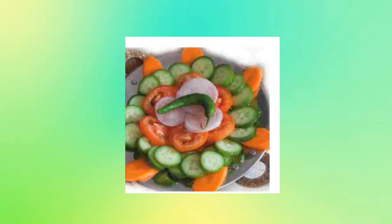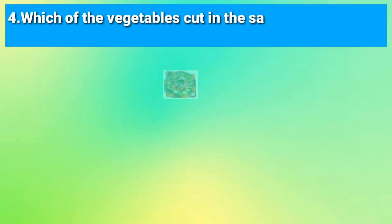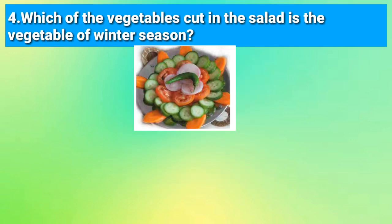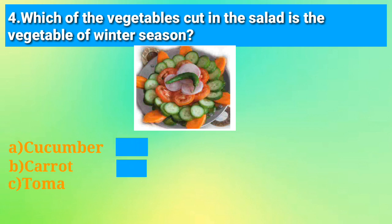Children, now look at this picture carefully. Can you guess what this is? Yes, it is the picture of a salad. Now look at the picture again and answer: which of the vegetables cut in the salad is a vegetable of the winter season? Cucumber, carrot, tomato, or chilli? The right answer is option B — carrot.